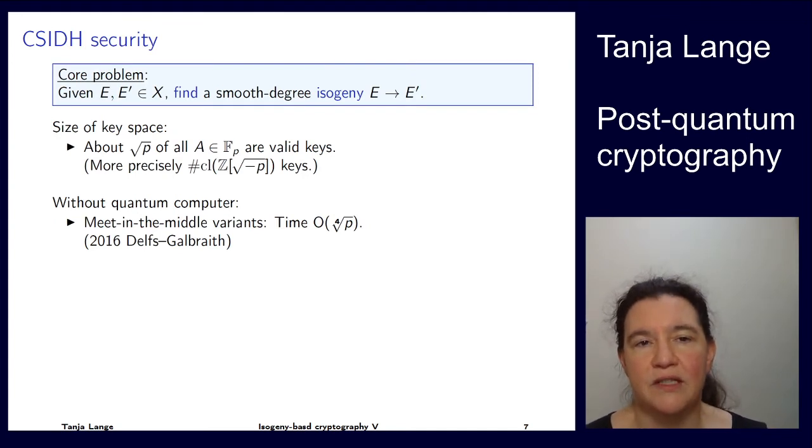When you look at the CSIDH security, the core problem is you're seeing the base curve, typically E₀ where a equals zero, and you're seeing the key of Alice or the key of Bob. It would be really bad if you could do brute force key search, so we need to have enough keys. Not every a is a valid key—not every a gives a super singular curve—but about square root of p of the a's are working.